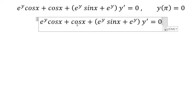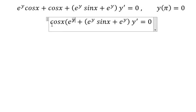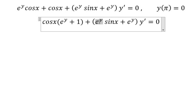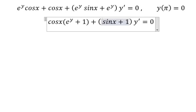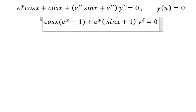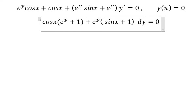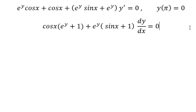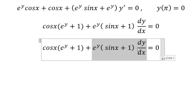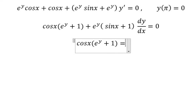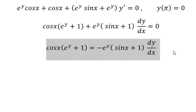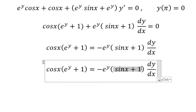We have cosine x — we can do factorization. And e to the power of y — we can do another factorization. This one we can change by dy over dx. So I will put this one go to the right. Next, sine x plus 1 and dx we put on the left. E to the power of y plus 1 we put on the right.